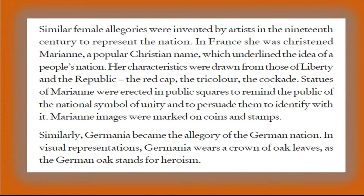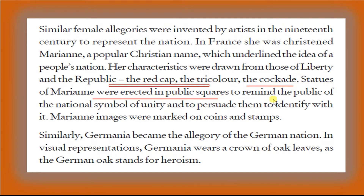Similar female allegories were invented by artists in the 19th century to represent the nation. In France she was called Marianne, reflecting the Christian religion's influence on the name of the French allegory, which underlined the idea of a people's nation. Her characteristics were drawn from those of Liberty and Republic — the red cap, tricolour, and red cockade. These were installed in public places as symbols of nationality to establish the identity of the nation.